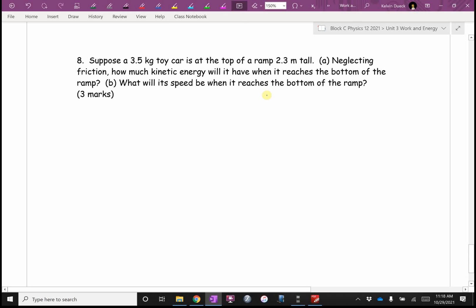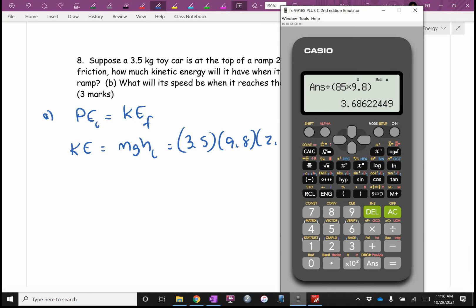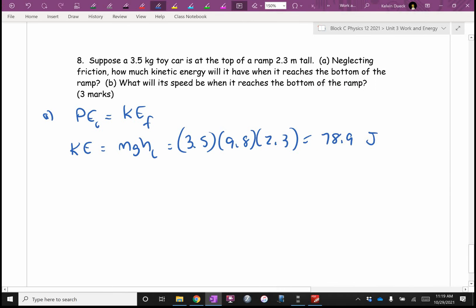Toy car is at the top of a ramp 2.3 meters tall. If we ignore friction, how much kinetic energy will it have when it reaches the bottom of the ramp? Okay, I guess I'm going to use conservation of energy, but I think what I'm going to end up with is that all of my potential is going to turn into kinetic. And so the kinetic final, this is part a, is going to be mgh initial. It's going to be 3.5 times 9.8 times 2.3, and I get 78.9 joules of energy.